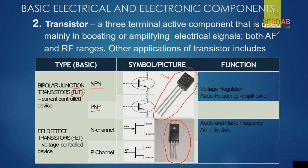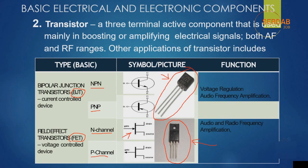The second most common type is the field-effect transistor, or FET. It is a voltage-control device and comes in two types: N-channel and P-channel. This is the electrical symbol and physical layout. It is used in audio and radio frequency amplification, and in universal voltage AC-to-DC or DC-to-AC circuits. These two transistor types are very important — you need to know their working principles to identify faults in them.